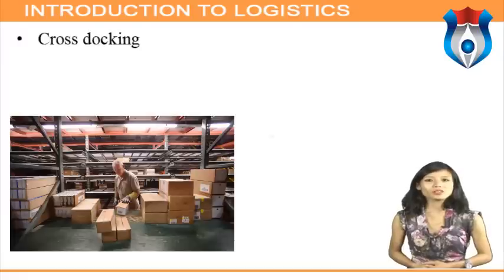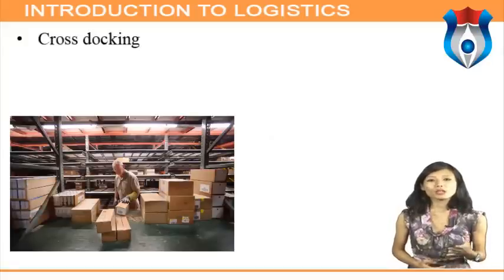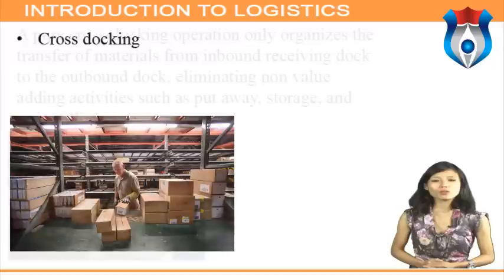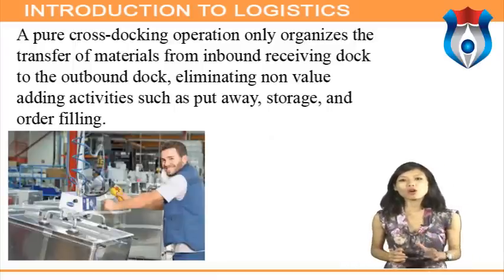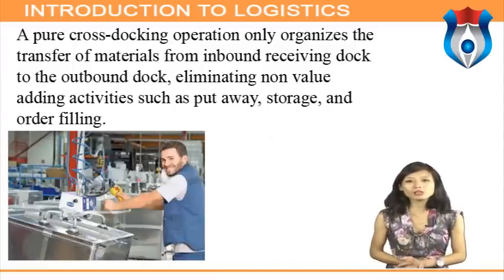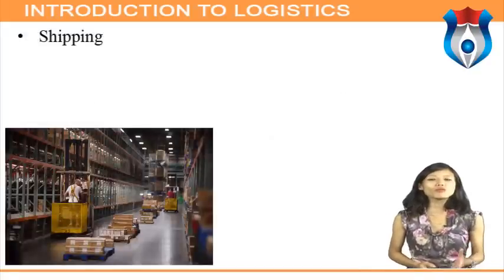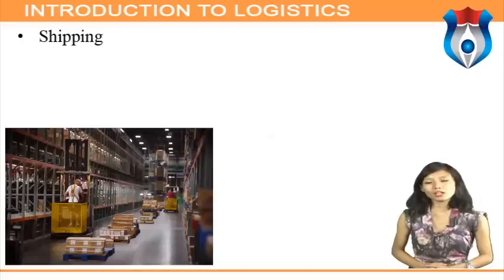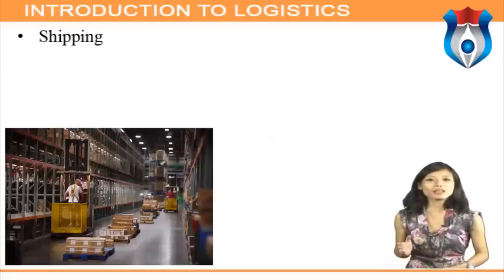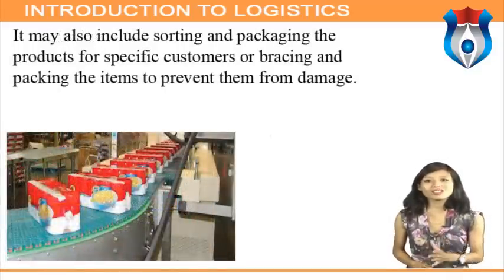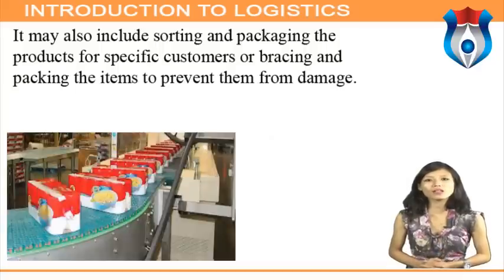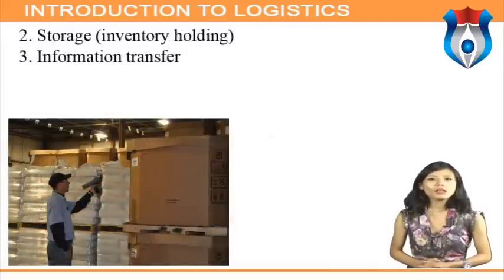Cross-docking — products received from one source are occasionally consolidated with products from other sources with the same destination and immediately sent to customers without moving to long-term storage. A pure cross-docking operation organizes the transfer of materials from inbound receiving dock to outbound dock, eliminating non-value-adding activities such as put-away, storage, and order filling. Shipping involves physically moving and loading assembled orders onto transportation carriers, checking content and sequence of orders, updating inventory records, and sorting and packaging products for specific customers.